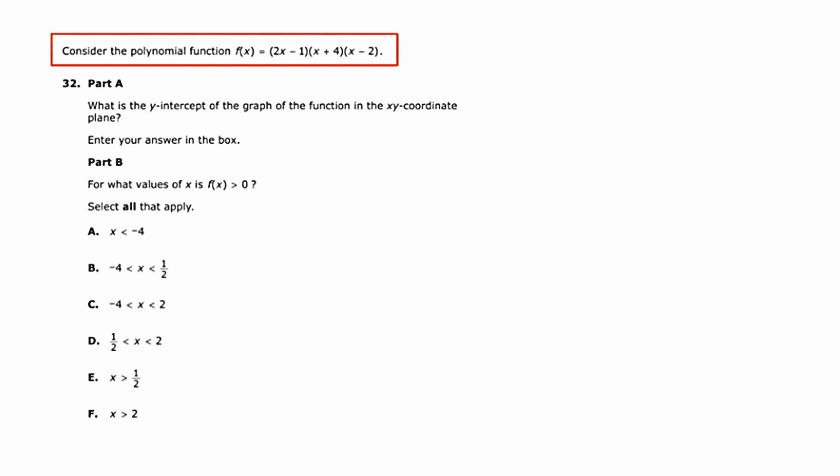So to graph a polynomial function, I'm going to look at three key elements. They are the y-intercept, the x-intercepts, and something called end behavior. So let's start with the y-intercept. To find the y-intercept of any function in the world, it's one simple thing you need to do, and that is set x equal to zero and solve for y.